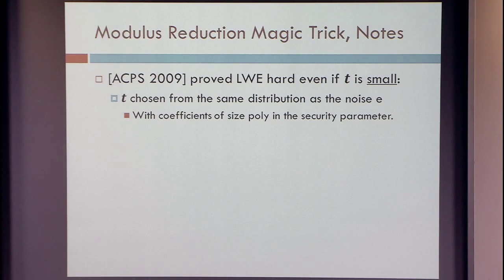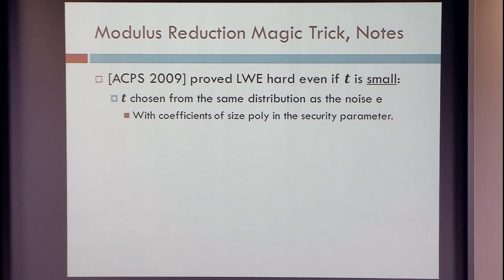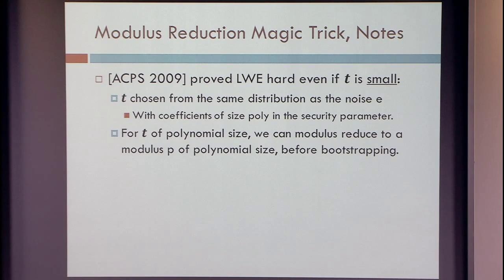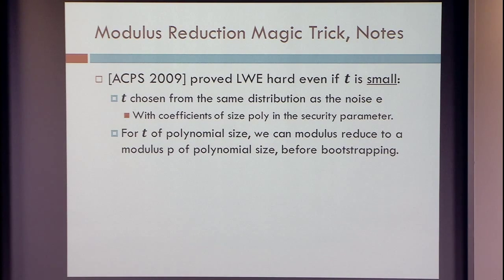Applebaum, Cash, Peikert, and Sahai showed that you need to assume that the secret key is small — go right ahead, it's fine. There is a reduction saying that this is just as hard as the original version of learning with errors. So let's choose our secret key this way. You choose the secret key from the same distribution where you choose your LWE errors, so you get something with small coordinates. If you set your parameters for LWE with errors of polynomial size, then the inner product between the rounding error and the secret key is of polynomial size. Therefore the smaller modulus P can be chosen of size polynomial in the security parameter — and importantly, independent of your evaluation capacity.